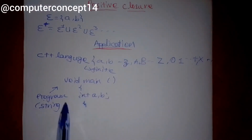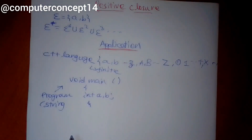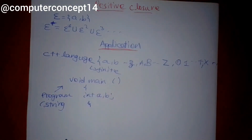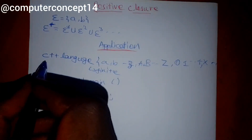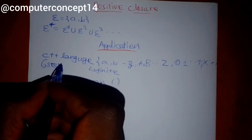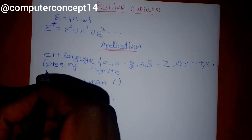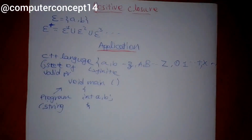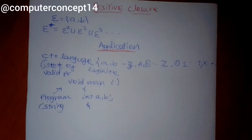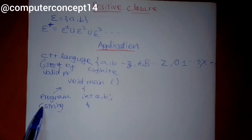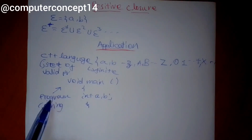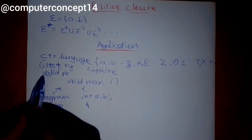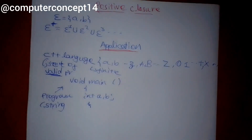So this one is a string. If you have a C++ language, then you can use the state of all valid programs. A valid program is one which is a C++ language. In our sense, a string — these are the things that are valid and invalid. Basically, programs are infinite.